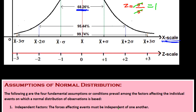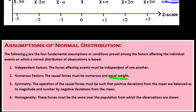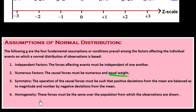The fourth assumption is homogeneity: the focus must be the same over the population from which the observations are drawn. The variance must be the same across the whole population, since we are taking a sample from that population. These are all the basic concepts about normal distribution. In the next session we will study how to find the probability distribution through the normal curve. Thank you.